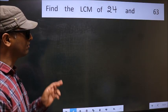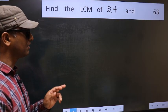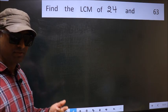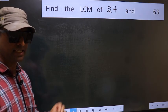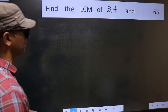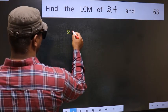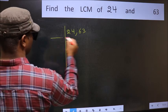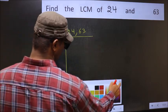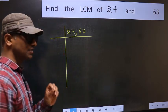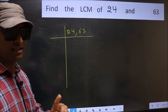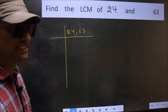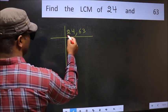Find the LCM of 24 and 63. To find the LCM, we should frame it in this way: 24 and 63. This is your step 1. Now you should focus on the first number, which is 24 here.